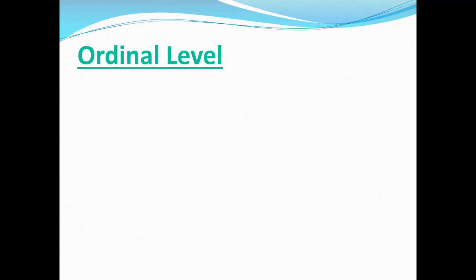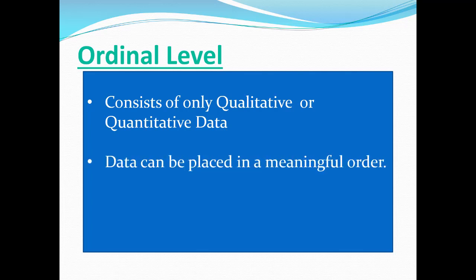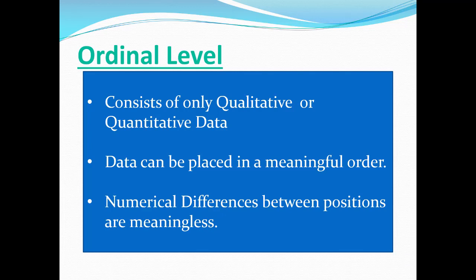The second level is called the ordinal level. Ordinal comes from the same root word as order. At this level you can have qualitative or quantitative data, and the data can be placed in a meaningful order — that's why we call it ordinal. However, numerical differences between positions are meaningless; there are no calculations you can perform. Note that alphabetical order is not a meaningful order. We're talking about orders of magnitude — for instance, listing earthquakes by their magnitude from greatest to smallest would be ordinal data.